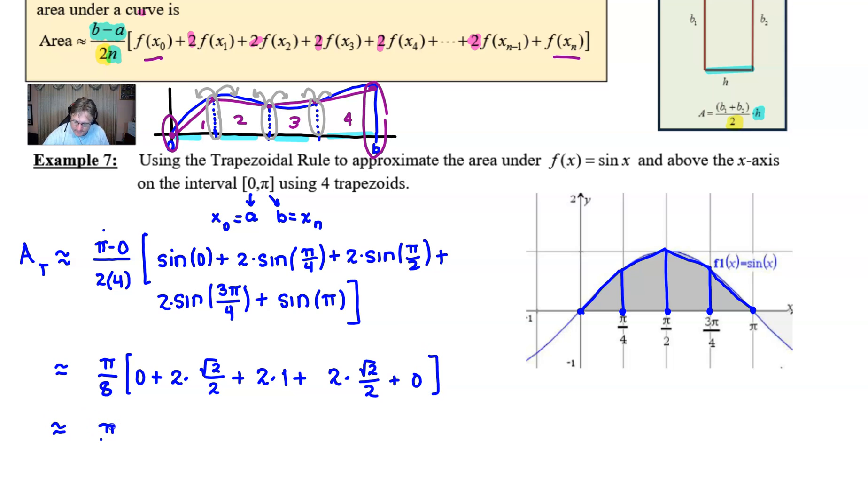And by the time this is simplified a little further, you're going to get π over eight times square root of two plus two plus square root of two. And those two square root of twos will combine. And you can finally call your answer something along the lines of π over four times one plus root two or π over eight times two plus two root two.